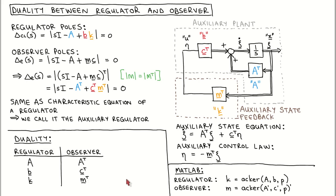Let's look at how we can use this duality to apply the regulator design procedure to the observer. MATLAB has a function called ACKER, which takes the matrices A and B and the desired closed loop pole locations P as arguments and returns the state feedback gain vector K. We can use ACKER to design the observer by passing A transposed, C transposed, and the desired observer poles as arguments. The function returns M transposed, so we have to transpose the result to retrieve the observer gain M.